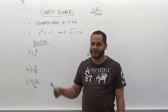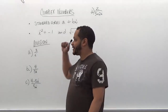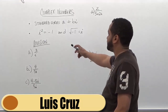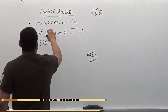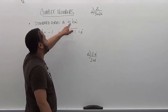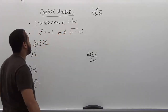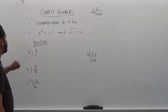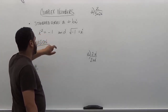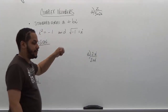Welcome to HelpYourMath.com. In this video we're going to run the complex number series with division. Remembering that the standard form of any solution is a + bi, where a and b are numbers and i represents the imaginary component. Also, i² is equivalent to negative one, and the square root of negative one is also i.